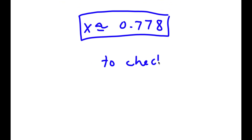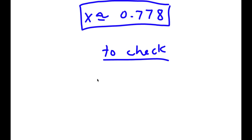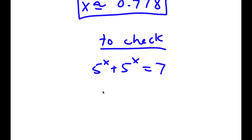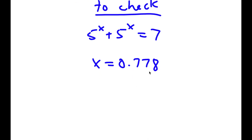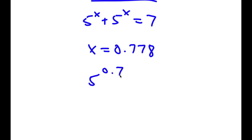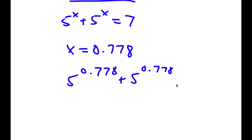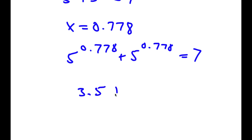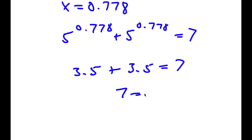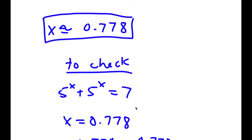Now to check: our original equation was 5 to the power of x plus 5 to the power of x is equal to 7, and we have x is equal to 0.778. Substituting, I get 5 to the power of 0.778 plus 5 to the power of 0.778 is equal to 7. Now 5 to the power of 0.778 is approximately equal to 3.5, plus 3.5 is equal to 7. So 7 equals 7 — our solution is correct.